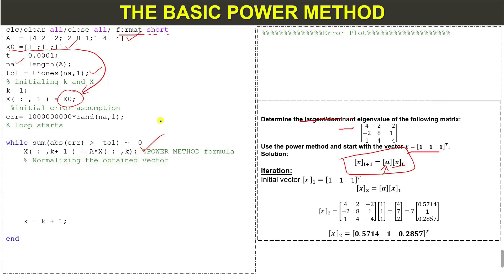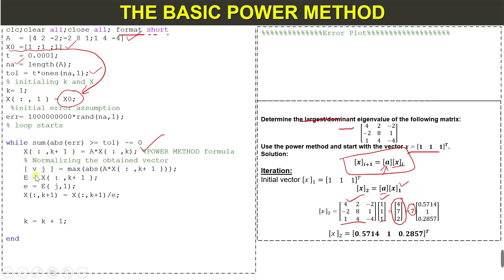Then we normalize the obtained vector. When we multiply the matrix with the initial vector, we get a new vector. We normalize this new vector by dividing by the largest absolute value of the vector. So here we first normalize the obtained vector: v_j equals the maximum absolute value of the obtained vector, and x of k+1 is divided by v_j to get our normalized new vector.